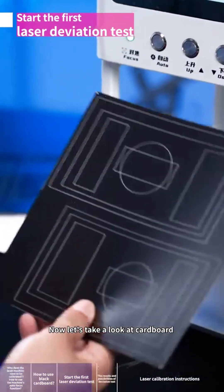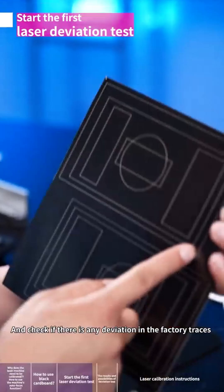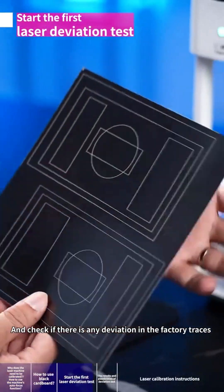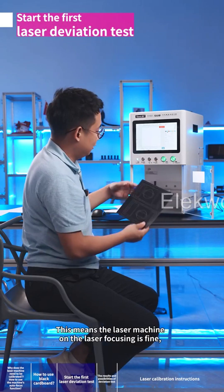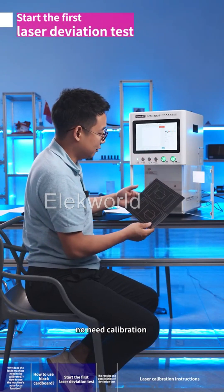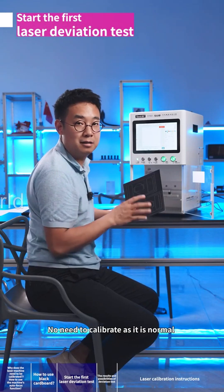Now let's take a look at the cardboard and check if there is any deviation in the factory traces. They overlap very well. This means the laser machine focusing is fine. No need calibration. No need to calibrate as it is normal.